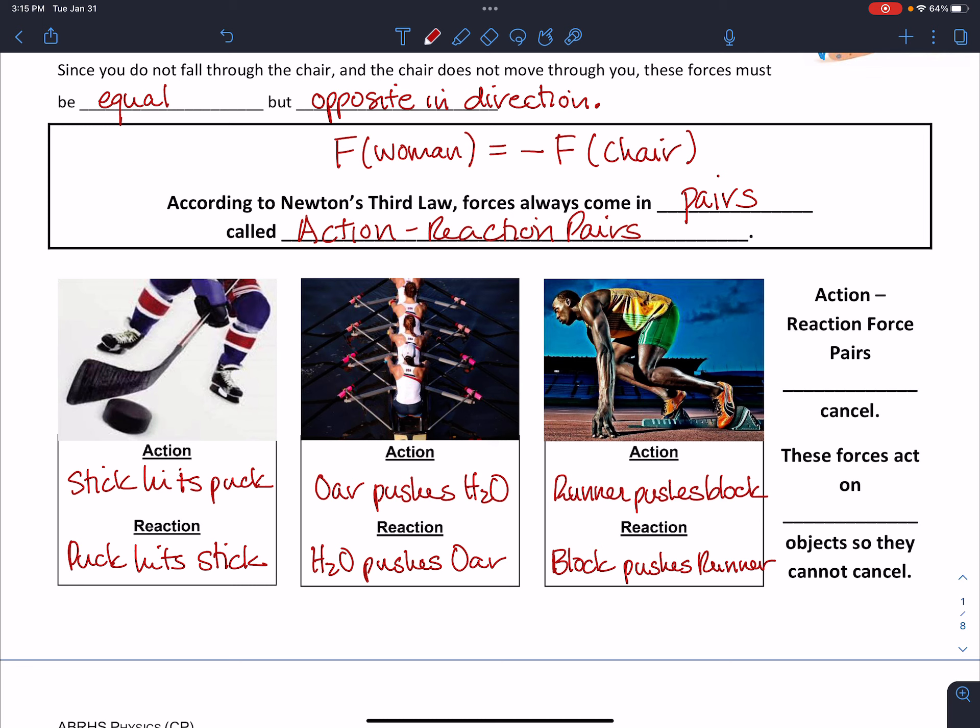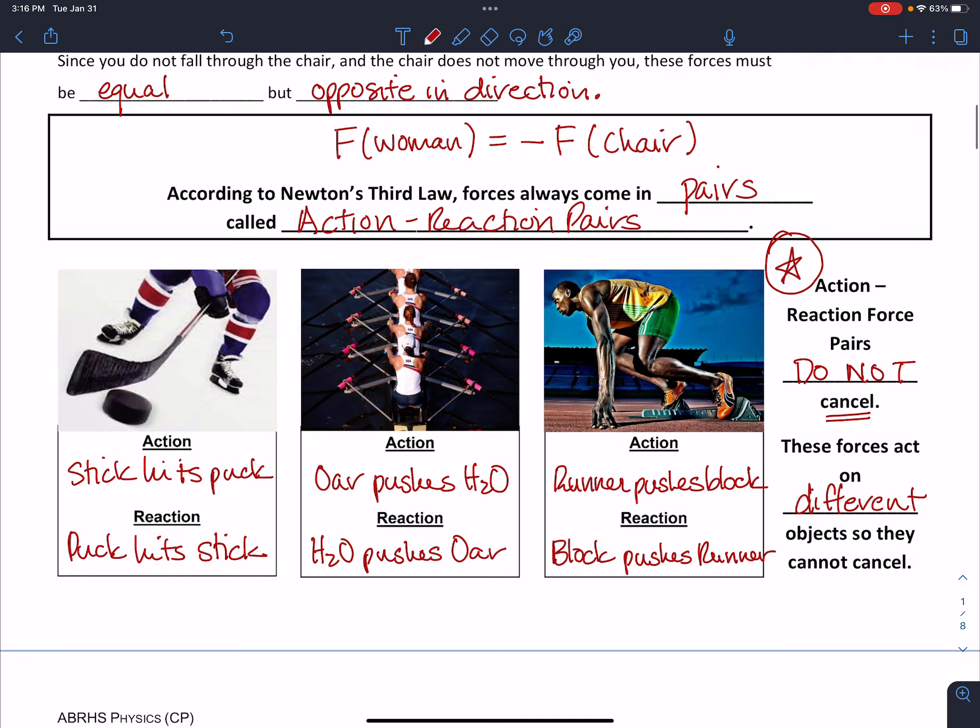So action and reaction pairs do not cancel. And this is a really important concept. The reason that these forces don't cancel like we saw back in our last unit is that they are acting on different objects. So when we drew our force diagrams before, we would look at all of the forces acting on that single object. When we talk about Newton's third law, though, we're looking at one object interacting with a second object, so we need to draw two separate force diagrams. And one of the forces in each of those diagrams will be the action or reaction force.